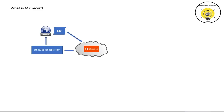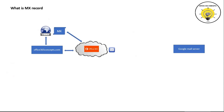If the MX record is pointed to Office 365, in that scenario, if an external domain sends an email, that email will be delivered directly to Office 365 and it will be filtered by Exchange Online Protection.